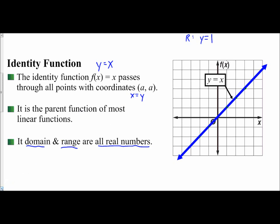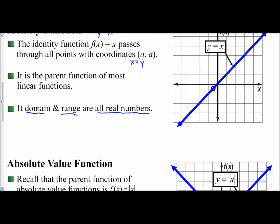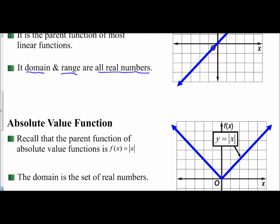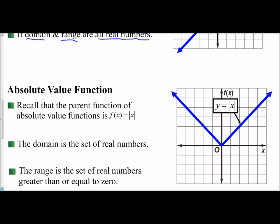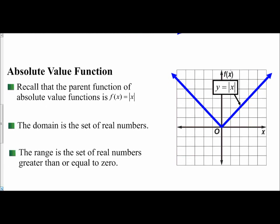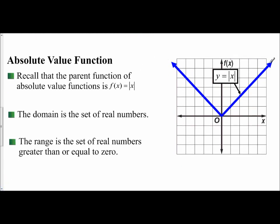Let's next look at absolute value functions. An absolute value function — the graph of an absolute value is V-shaped. The parent function of absolute values is f of x equals the absolute value of x, or y equals the absolute value of x. The domain: the arrows go up and to the right and up and to the left forever, so since it's going right and left forever, your domain is all real numbers.